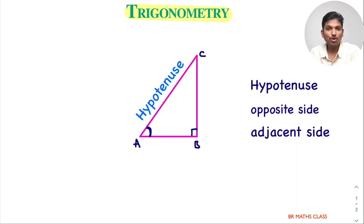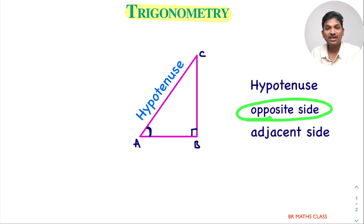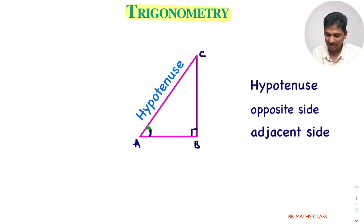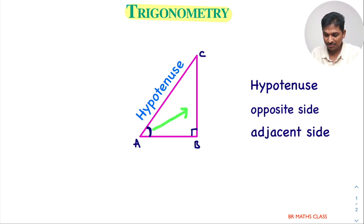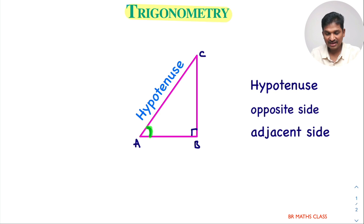Now, which side is the opposite side and which is the adjacent side? Here, doubt comes to many students. Whenever we say opposite side, you need to ask: opposite side of which angle? To identify the opposite side, you must specify which angle. If I consider angle A, the side opposite to angle A is BC. BC is the opposite side of angle A.